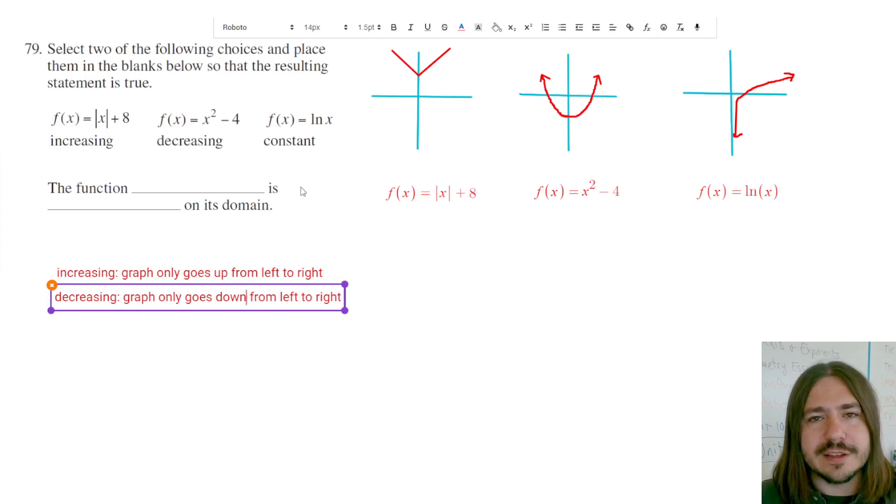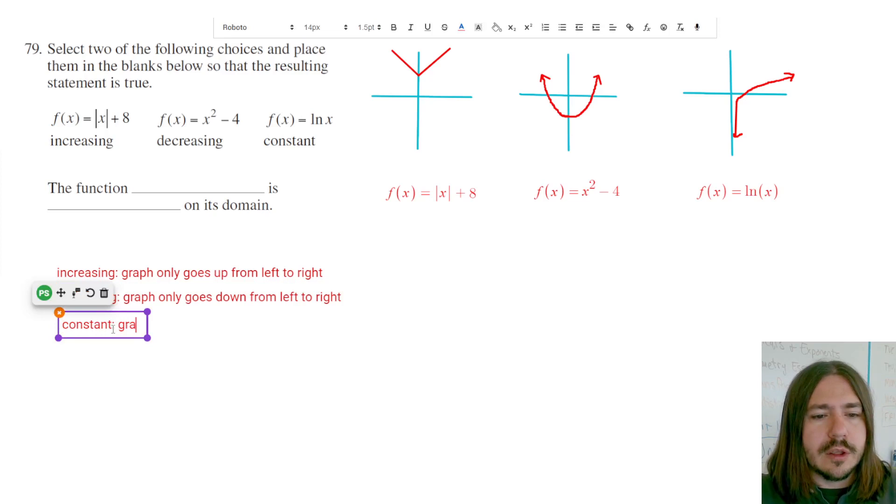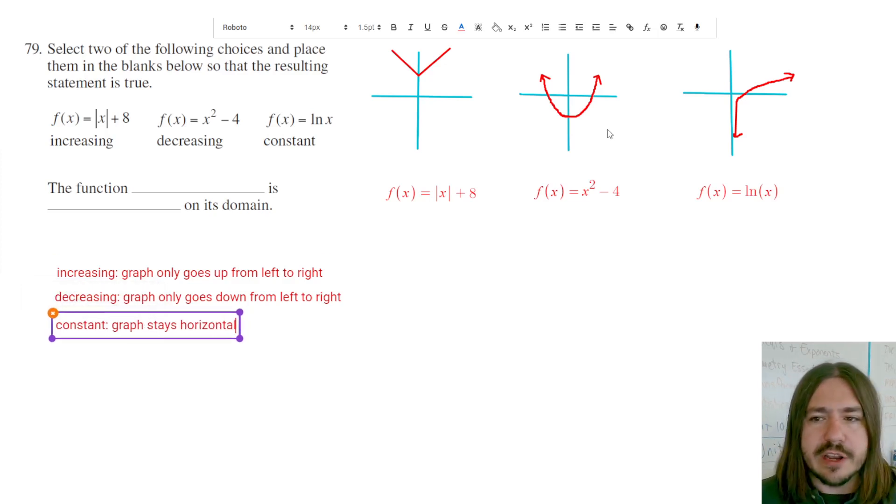But this particular question is asking for which function is always doing one of these three things for the entire domain. So like this one changes from decreasing to increasing. This one goes from decreasing to increasing. This one's always increasing. And then constant means it basically doesn't go up or down. The graph stays horizontal. It just kind of goes straight across. And none of these have any constant behavior. So that one really wouldn't make sense for any of these anyway.